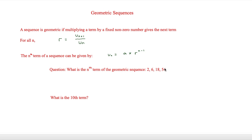For example, what is the nth term of the geometric sequence 2, 6, 18, 54? To start, we want to find r. We can do this by taking u2 divided by u1, so 6 over 2, which equals 3. So r = 3. We also know a, because it's the first term in the sequence, so a = 2. That means our nth term is 2 × 3^(n-1).